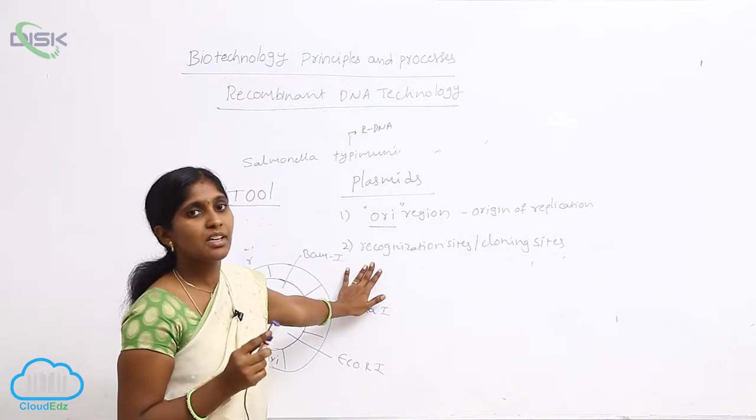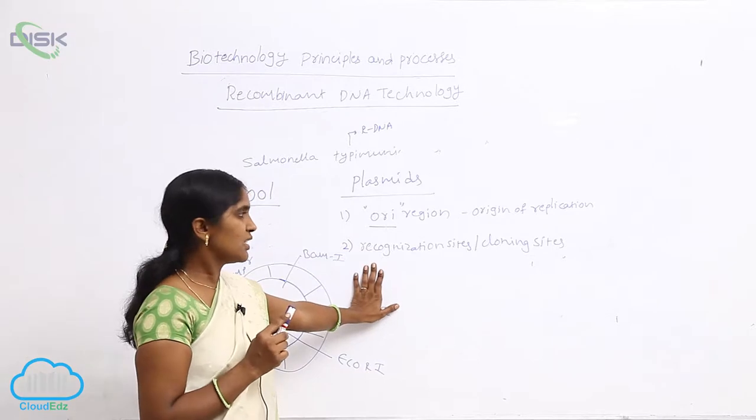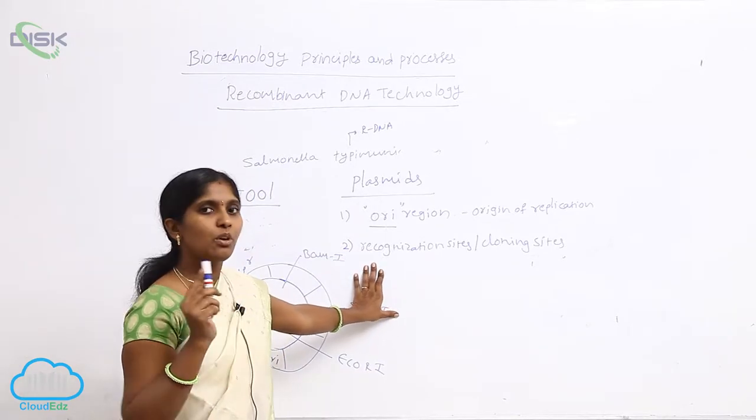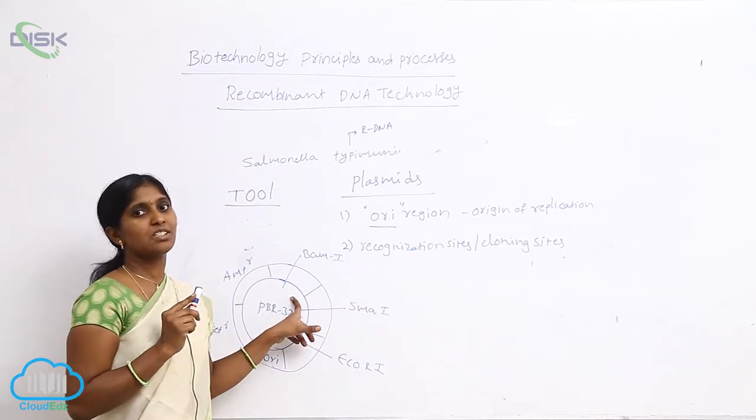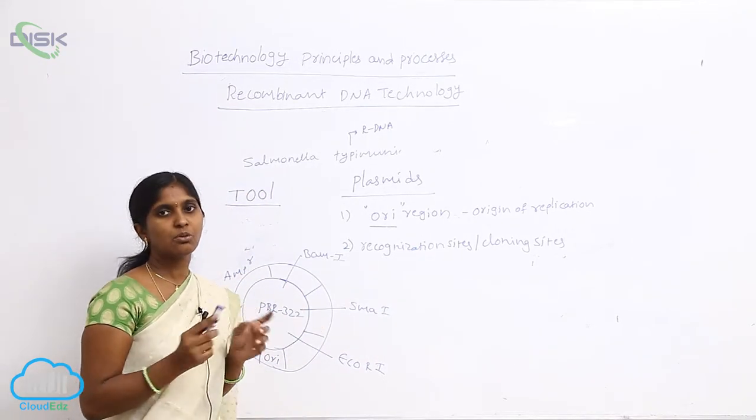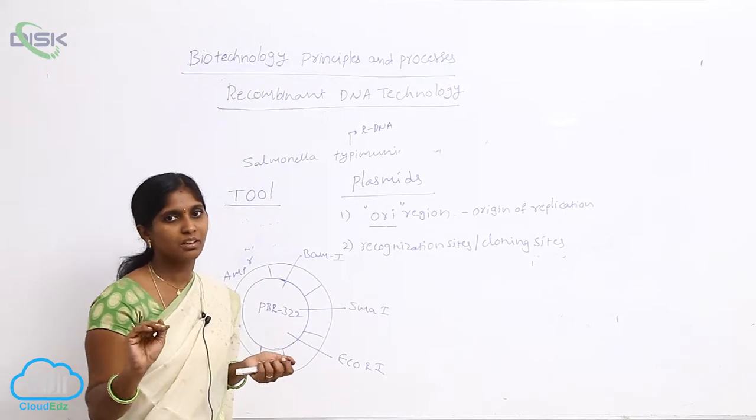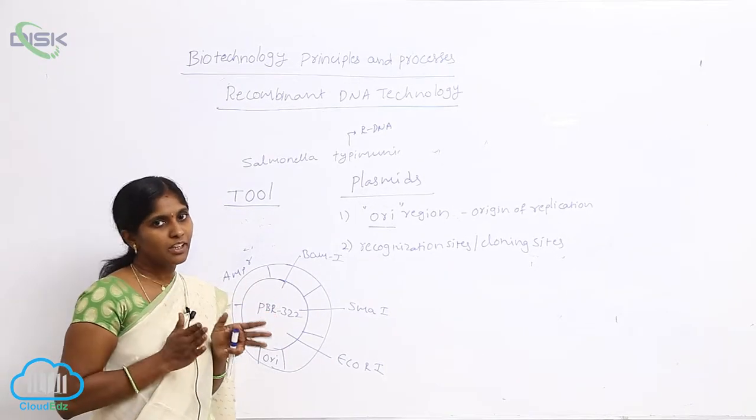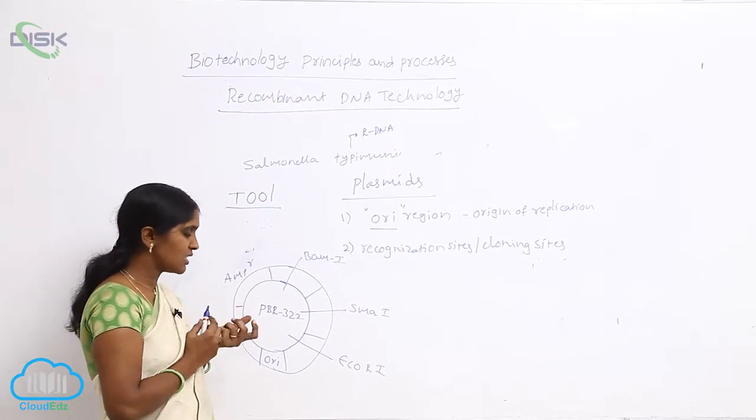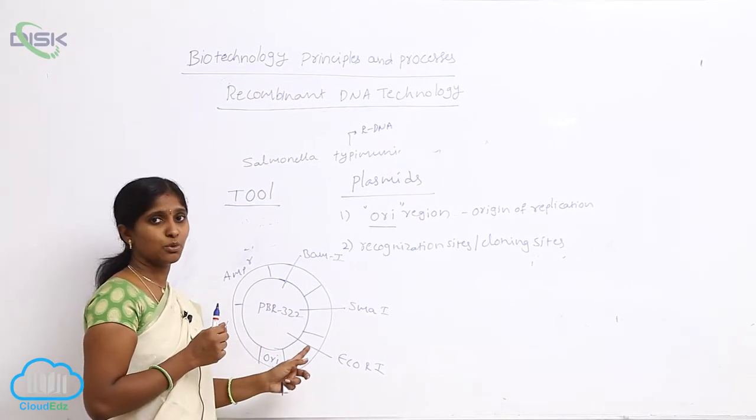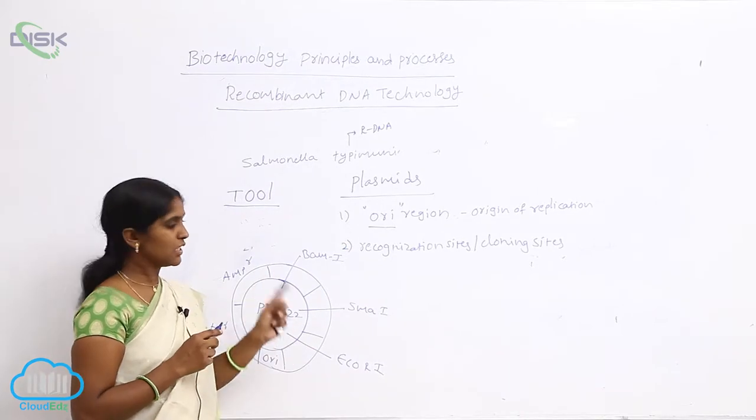Next are recognition sites and cloning sites. When you apply the restriction enzymes, the restriction site is most important. Without a restriction site, there is no cut. For making the cut, the restriction sites are most important for different restriction enzymes. Plasmids are very suitable.